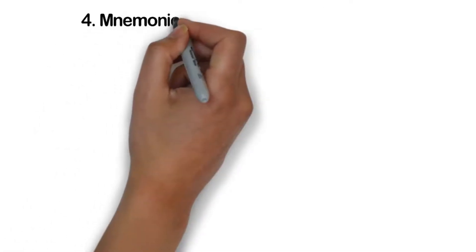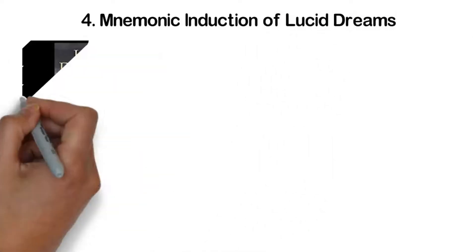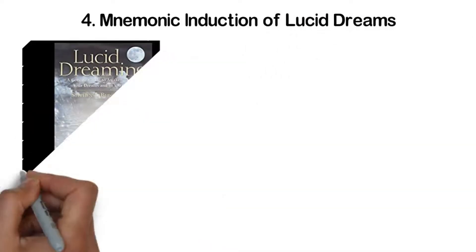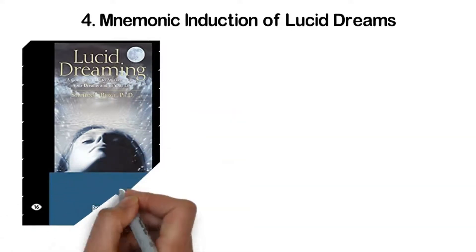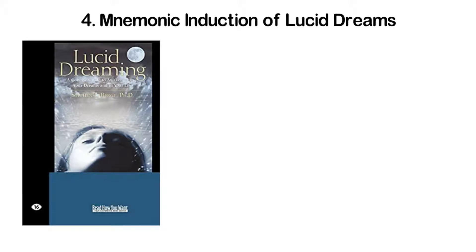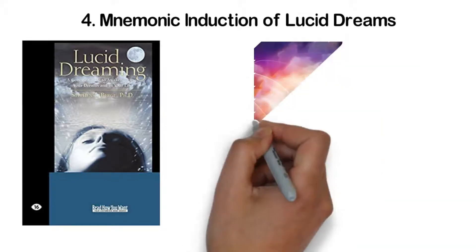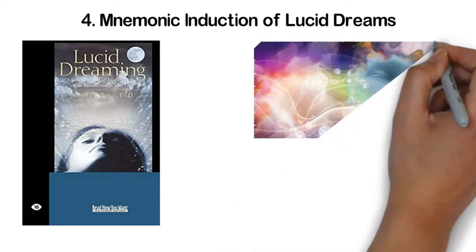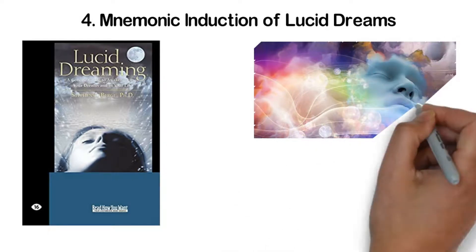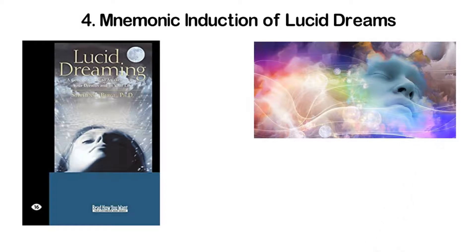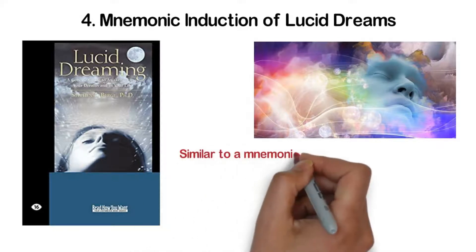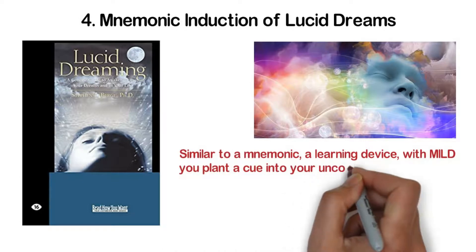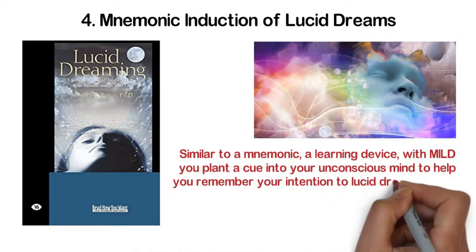Four: Mnemonic Induction of Lucid Dreams. Created by Dr. Stephen LaBerge in 1980, the Mnemonic Induction of Lucid Dreams, commonly known as MILD, was one of the first scientifically backed methods of inducing lucid dreams. This method trains you to improve your self-awareness so that you can identify instances when you are dreaming. Similar to a mnemonic, a learning device, with MILD you plant a cue into your unconscious mind to help you remember your intention to lucid dream.